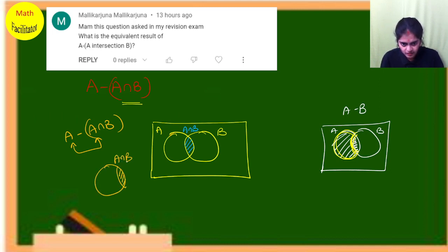What is common? This part is common between both. If I subtract, I get this part. What is this part you're seeing? This is nothing but A minus B. So A minus A intersection B equals A minus B.